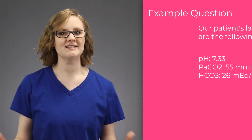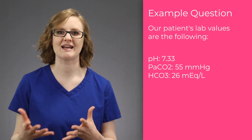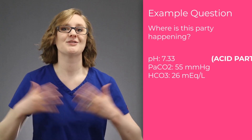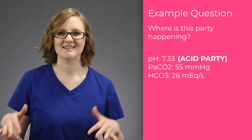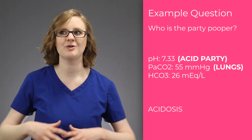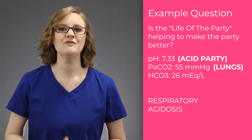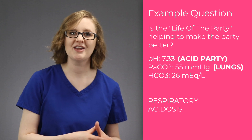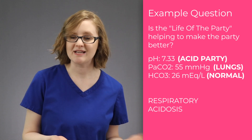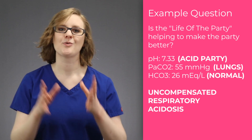Let's walk through an example. A patient has a pH of 7.33, a PaCO2 of 55, and an HCO3 of 26. Where is the party? The pH is less than 7.4, so it's an acid party — we're dealing with acidosis. Who is the party pooper? The PaCO2 is way too high, so the lungs are the party poopers — the problem is respiratory. Is the life of the party helping? The HCO3 is still within normal range, so the kidneys haven't noticed. The pH is still messed up, so this is uncompensated. Final answer: uncompensated respiratory acidosis.